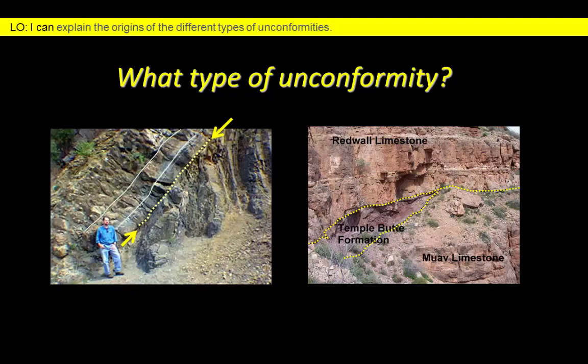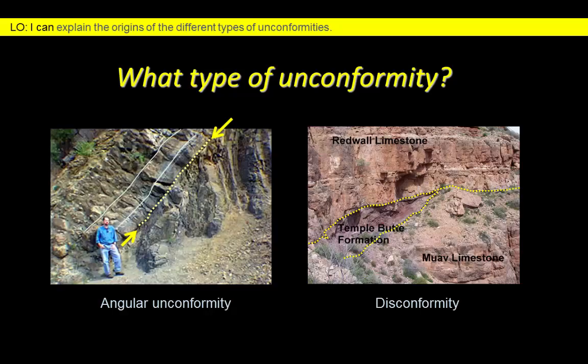Let's practice your powers of interpretation. How would you classify the unconformities pictured here? In the left image you can see that the sedimentary layers have different orientations above and below the unconformity surface. The surface itself is tilted, but it parallels the layers above the unconformity, while the layers below are more steeply inclined. Consequently, we would interpret this as an angular unconformity. The other photograph shows a pair of disconformities in the Grand Canyon. The Redwall limestone rests unconformably on top of both the Temple Butte formation and the Muav limestone, with much of the Temple Butte formation having been removed by erosion. The disconformity between the Redwall and Muav formations represents a gap of over 160 million years.